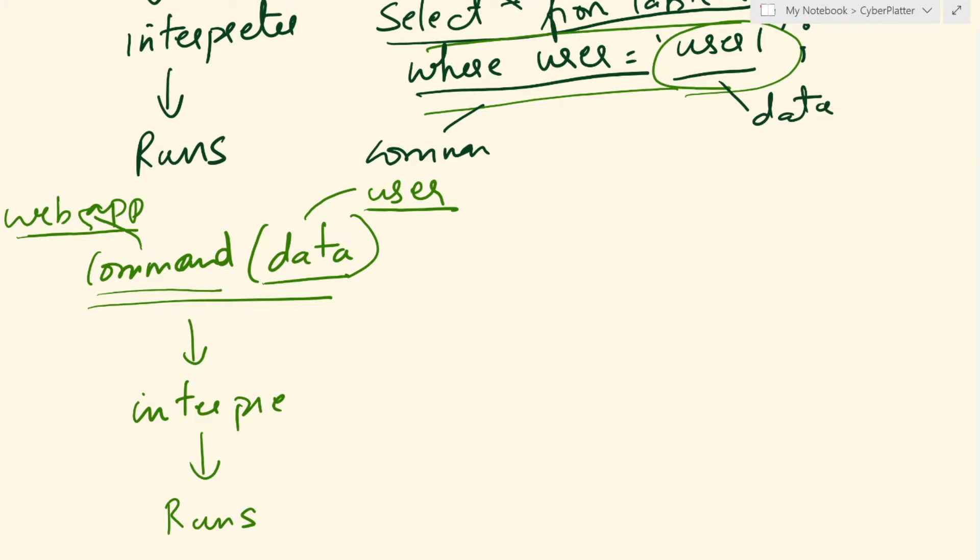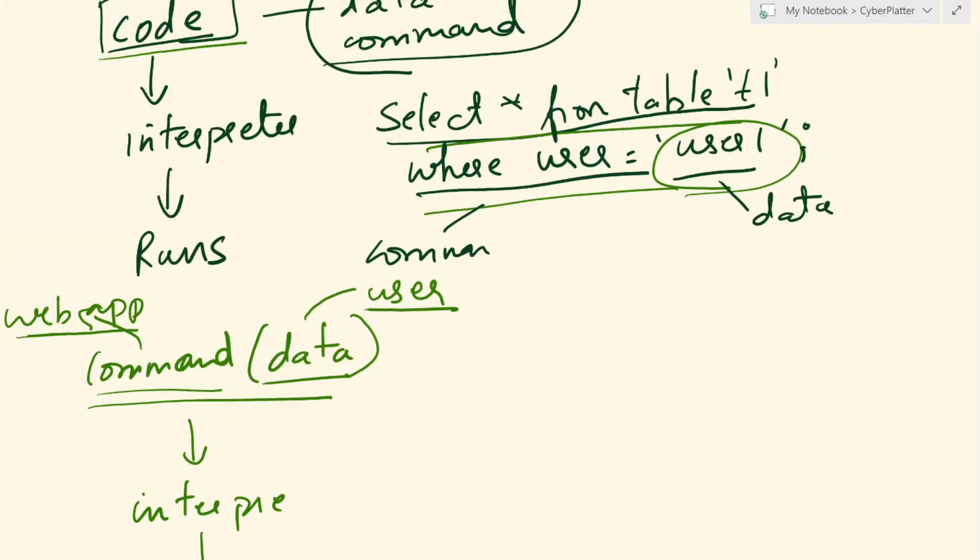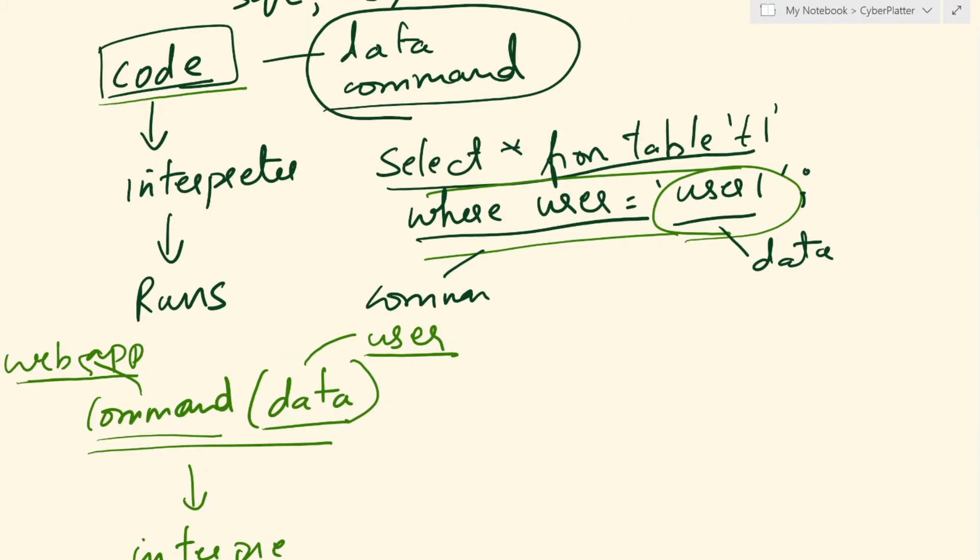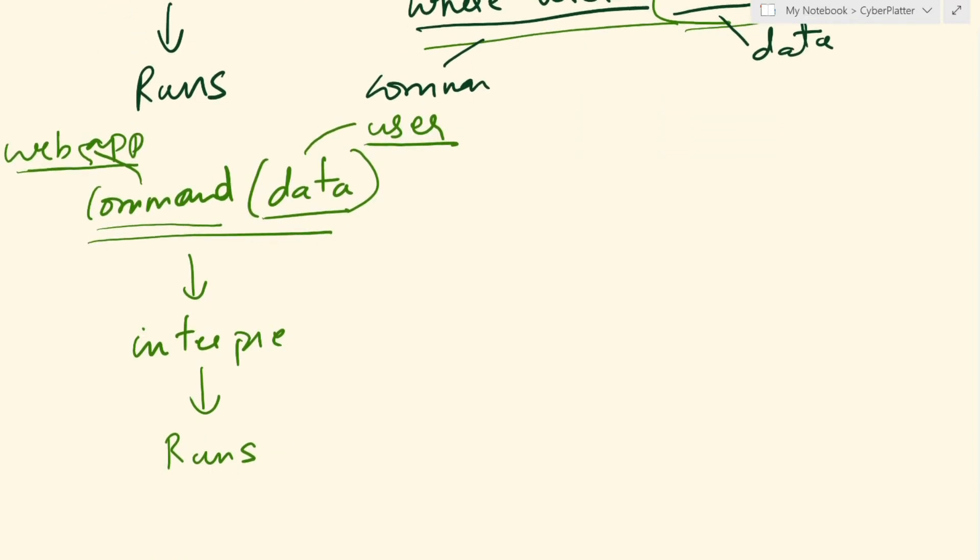Now let's see what happens in an injection attack. Because code is used, the same code is used to represent both data and command. Instead of sending the data, the user can send another command. So instead of data here, he's going to send another command, delete or select or update anything like this.